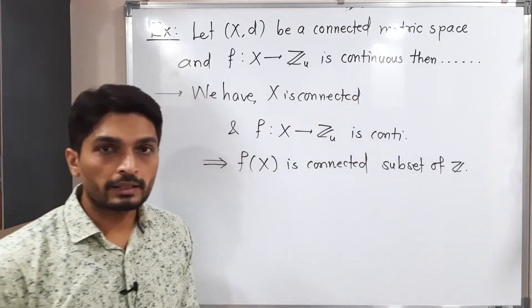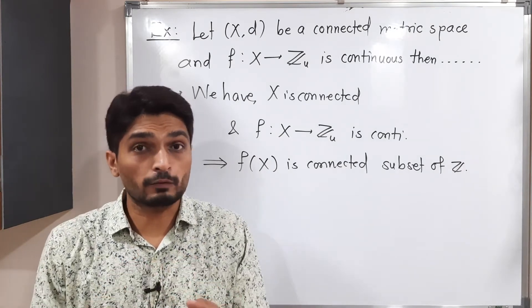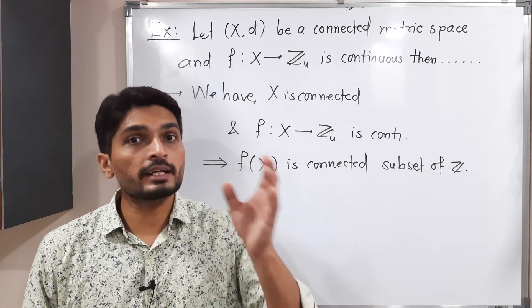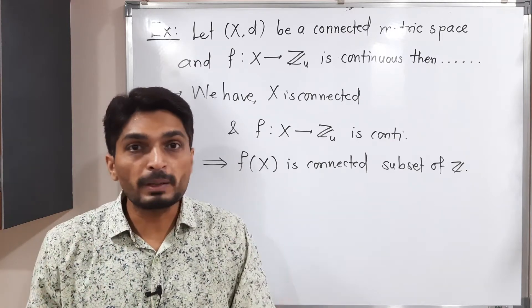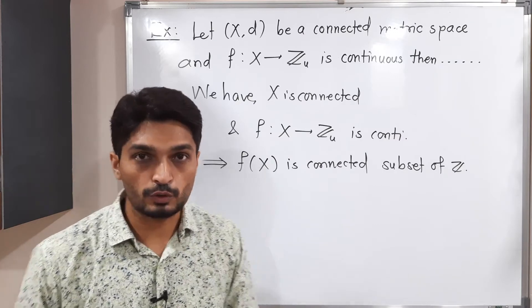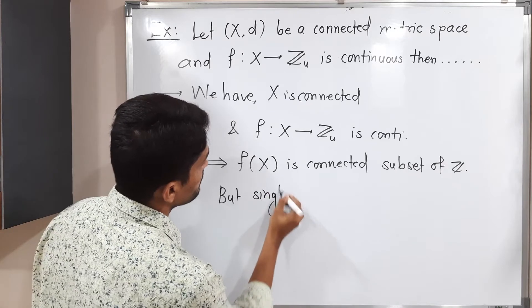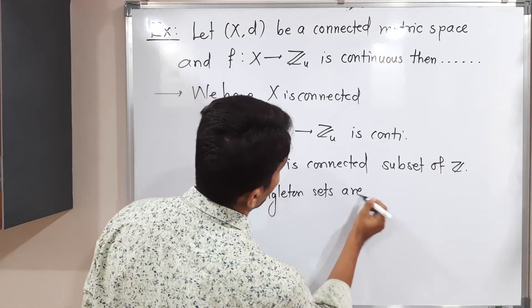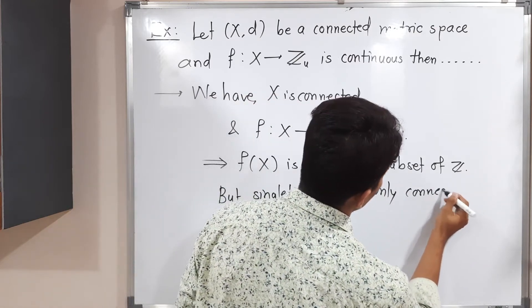But we know that singleton sets are only connected subsets of Z. Actually in R with usual metric, real numbers with usual metric, intervals and singleton sets both are connected subsets of R. But intervals cannot be possible in Z. So that is why singleton sets are only connected subsets of Z.